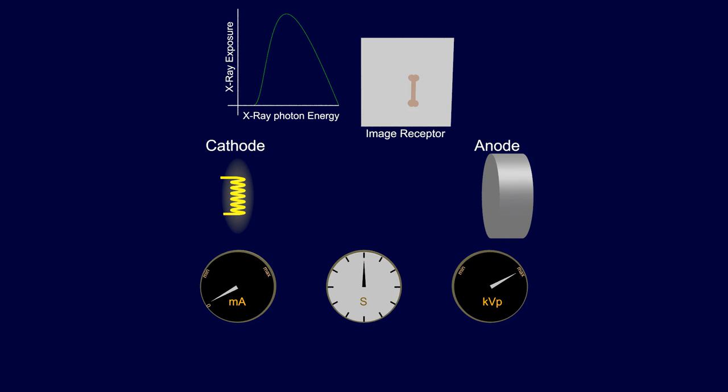MA, also known as milliamperage, is the number of electrons produced at the cathode. Time is the duration of the exposure. Different combinations of MA and time can produce the same exposure.